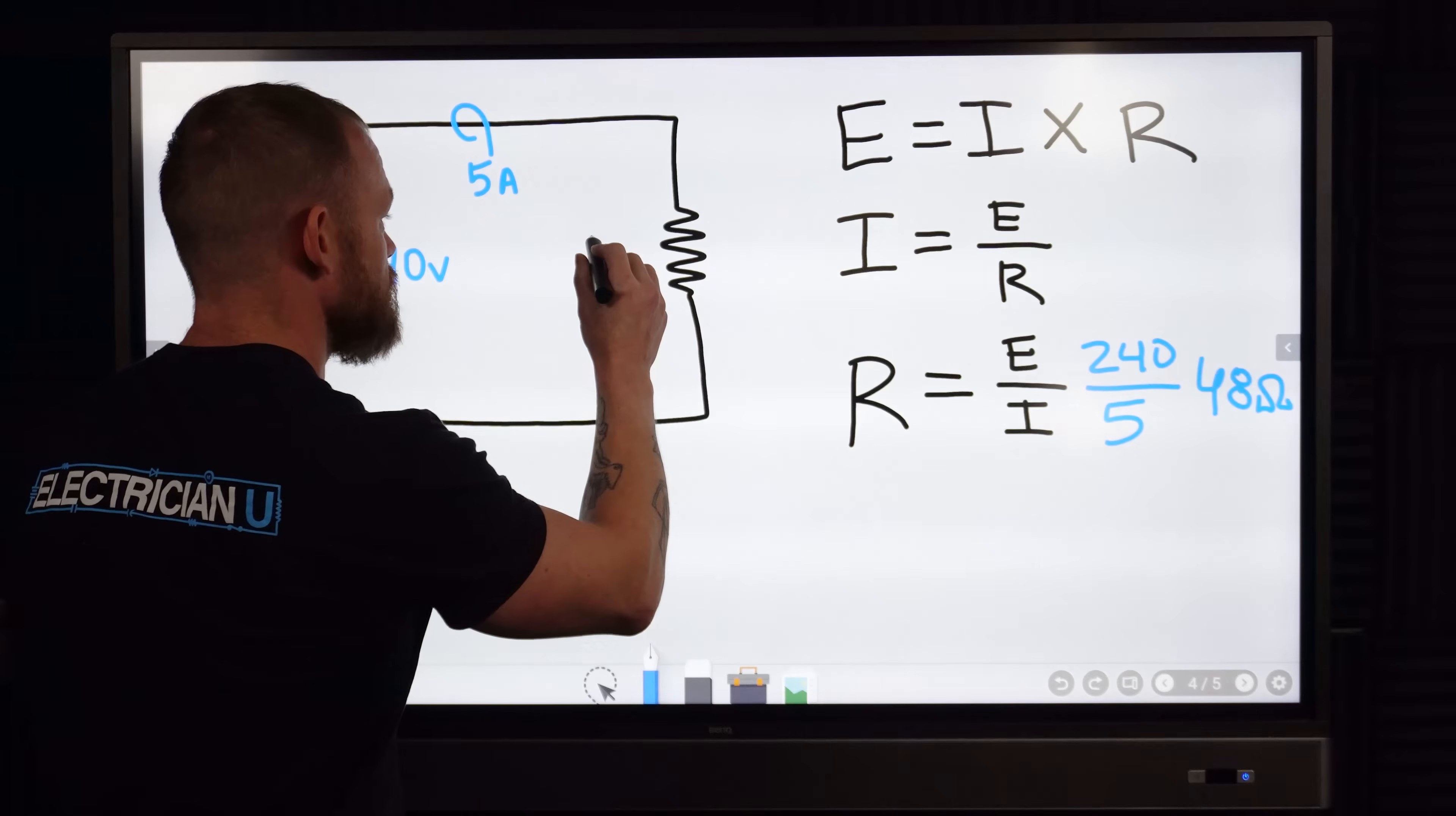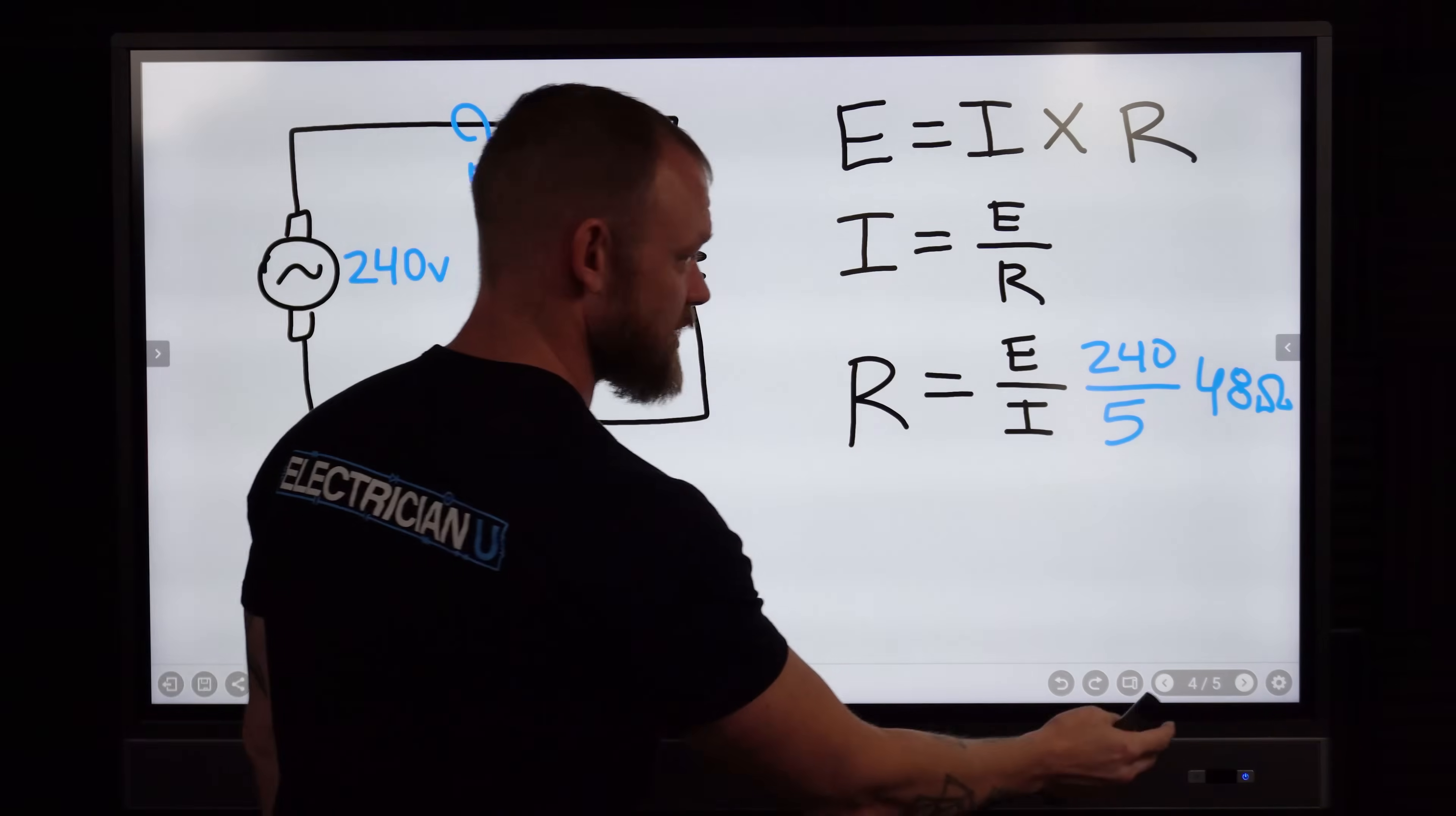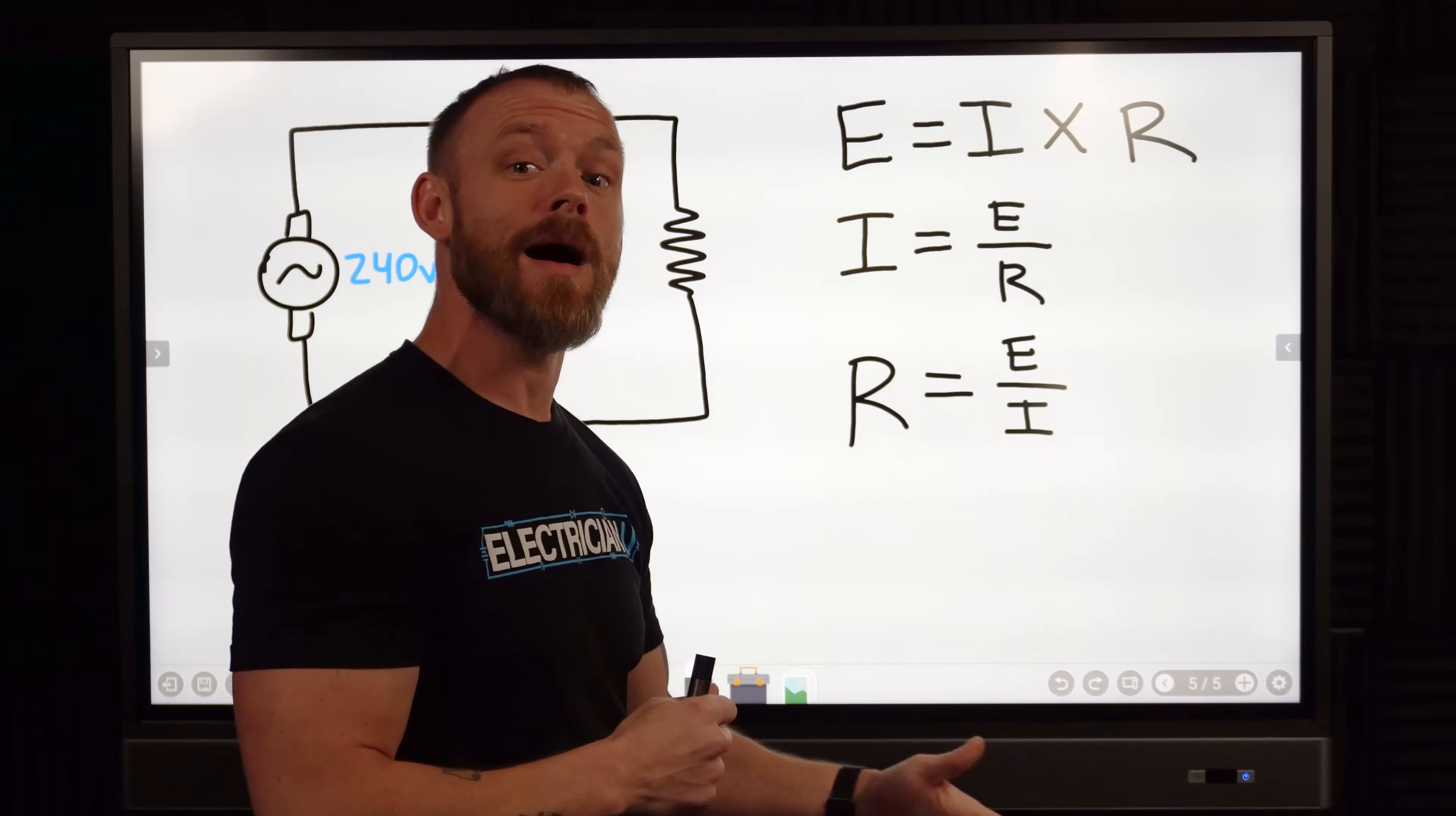Okay so let's try to change something again. Let's change our current to see what it does to the resistance. So in this situation, still 240 volts, but we're going to have 15 amps worth of current on the circuit now. So there's a lot more current flowing which means there's less opposition to current, so the resistance number should decrease.